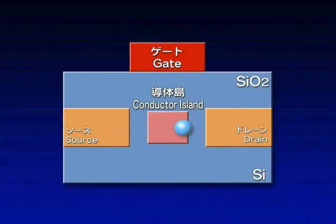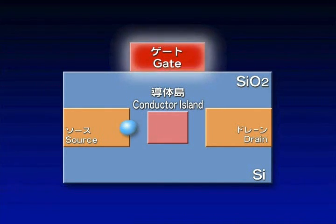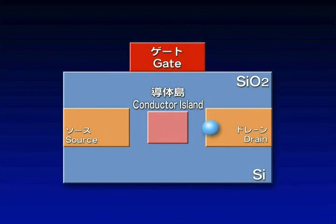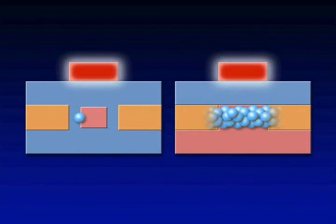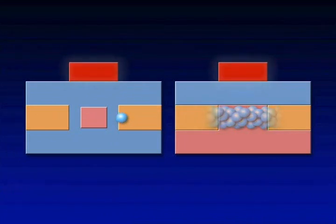A single electron device allows one bit of information to be sent by one electron and therefore requires only one one-hundred-thousandth of the power consumption of conventional devices, making ultimate power savings possible.